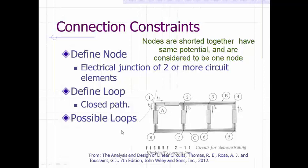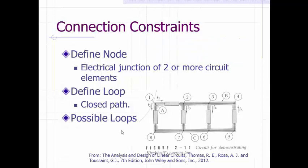Now let's look at loops. A loop means a closed path. Let's count how many loops we have: one, two, three, four, five, six.